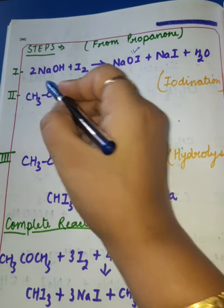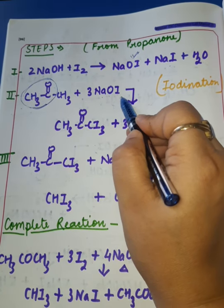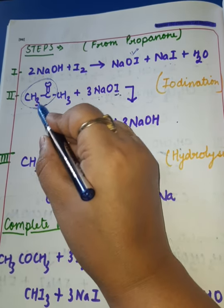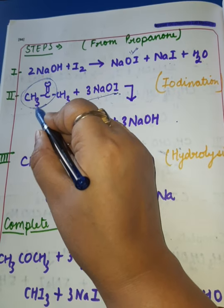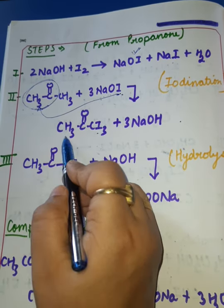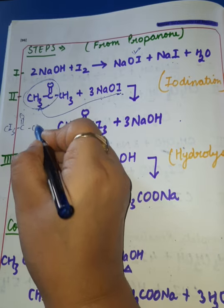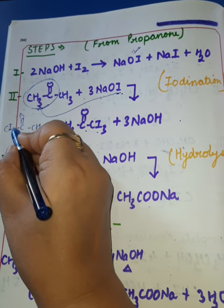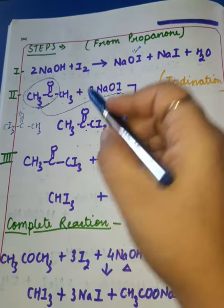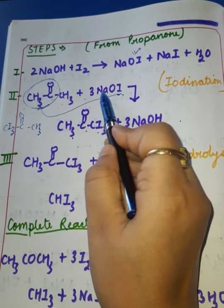Step 2: Since acetone directly contains the methyl keto group, NaOI performs iodination. Three iodines replace the three hydrogens of the CH3 group in the methyl keto group. Since acetone has methyl groups on both sides of C=O, the product can be written as CI3–C(=O)–CH3 — Tri-iodo acetone — with by-product 3 NaOH.